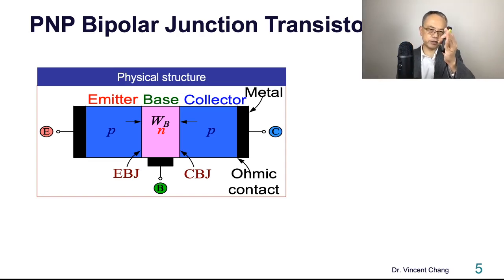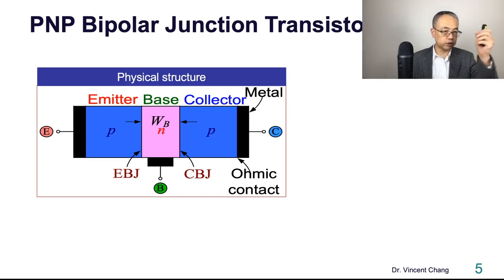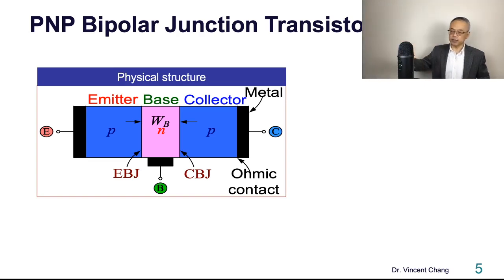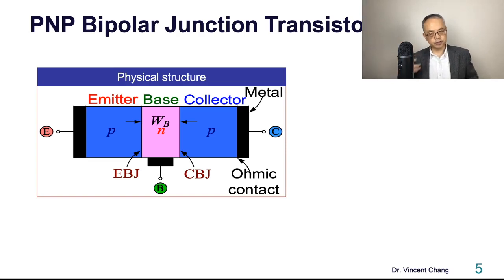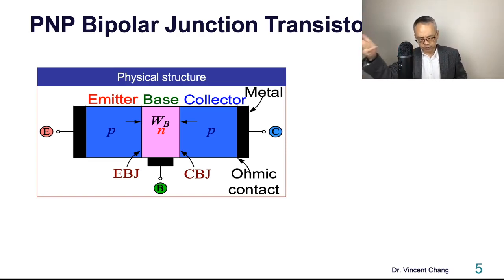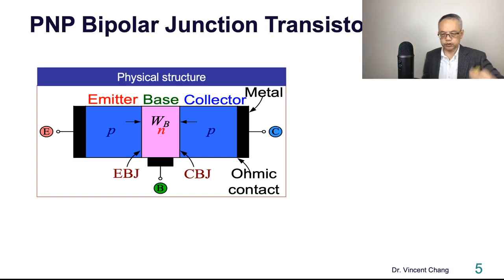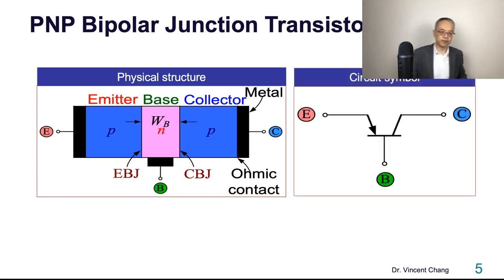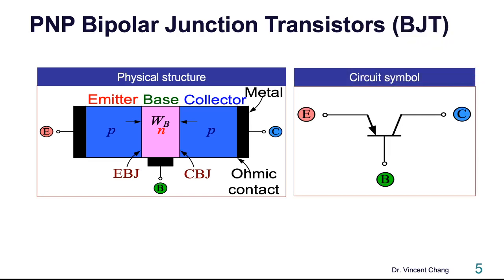The right-hand side PN junction is called the collector base junction, denoted CBJ. Just get used to it: left-hand side is the emitter base junction, right-hand side is the collector base junction. On the right-hand side is the circuit symbol with terminals E, B, C.